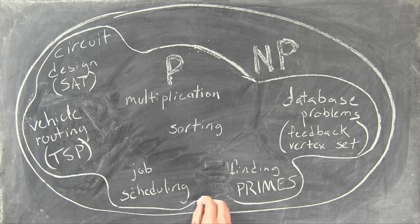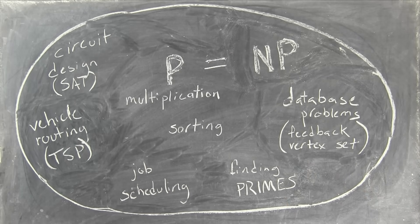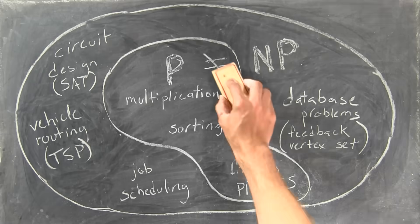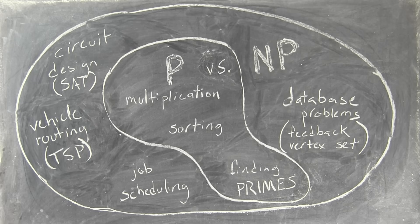So people started to wonder whether everything in NP would turn out to be in P, or if there were some NP problems that were truly harder than the ones in P. That's the P versus NP question. If all the NP problems are really in P, a lot of important puzzles we've been struggling with are going to turn out to be easy for computers to solve.